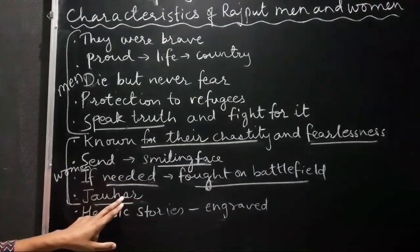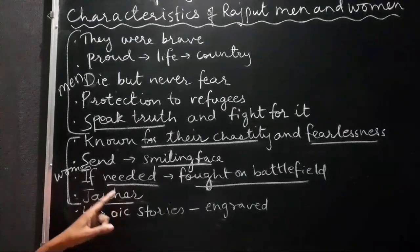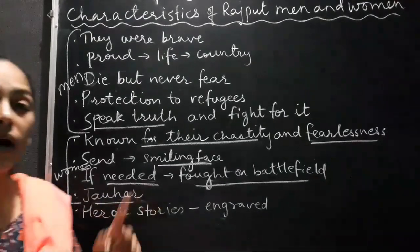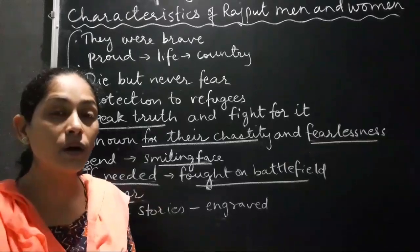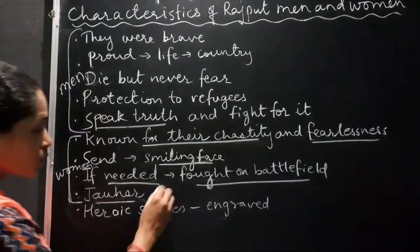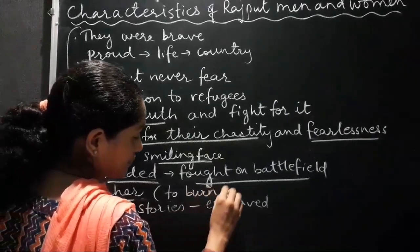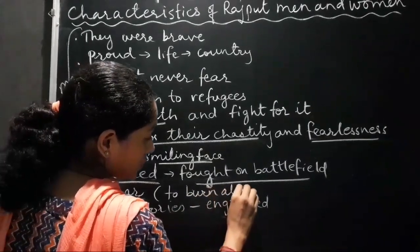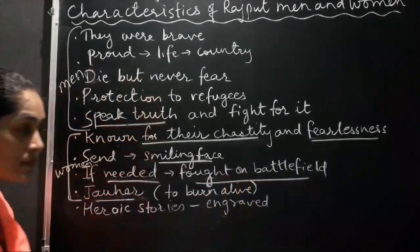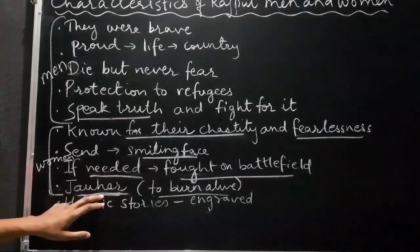The Rajput women performed Johar. If their husbands were defeated or they attained martyrdom in the wars, what is Johar? Johar means to burn a life — they used to burn themselves to avoid falling into the hands of the enemy.